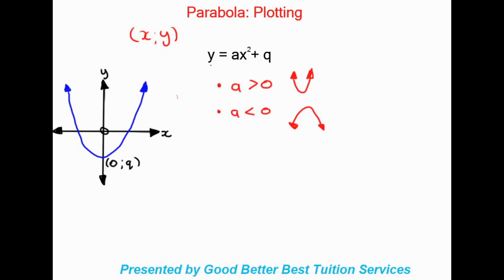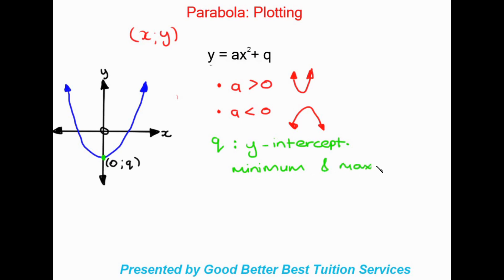Now looking at q: q signifies our y-intercept, which is where the graph passes through the y-axis. Another thing to know about q is that it is also our minimum and our maximum value. It is the turning point of the graph — when the graph comes all the way down, it reaches q and starts to turn back up. So it is our minimum value for a smiley face, but if we had a sad face it would be our maximum value.